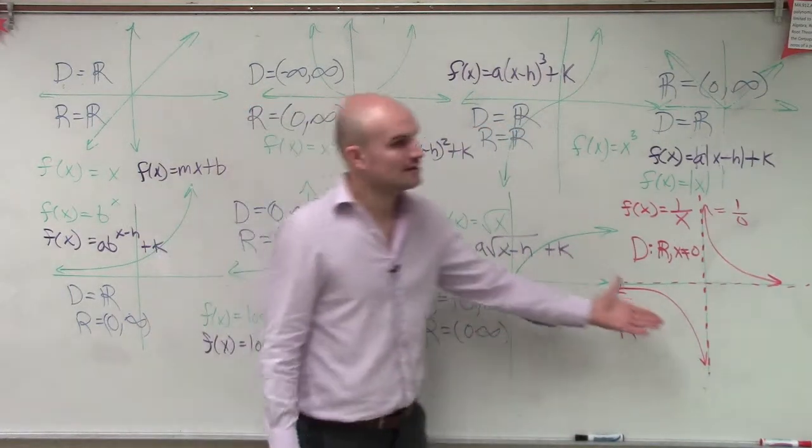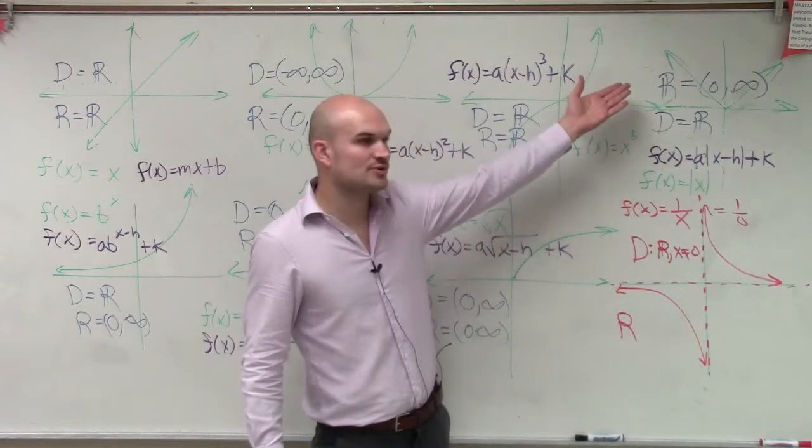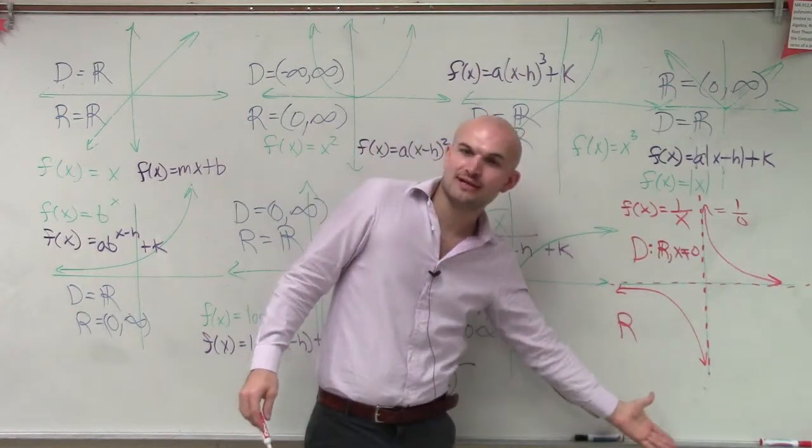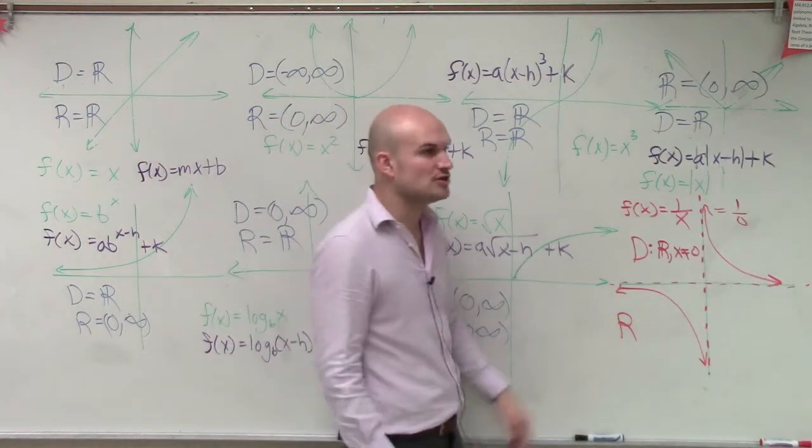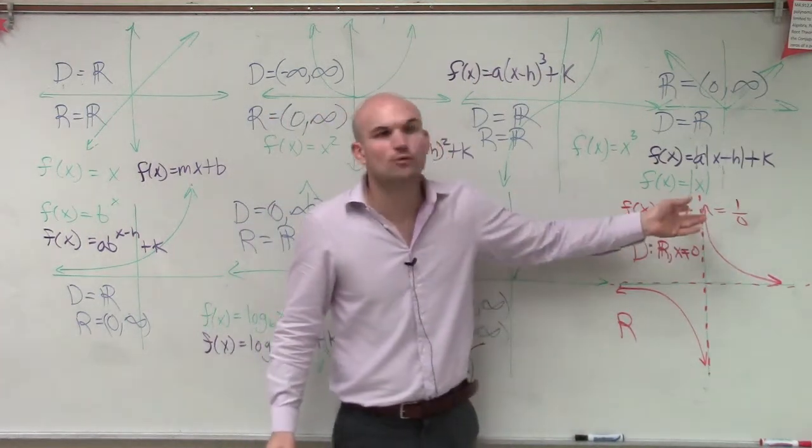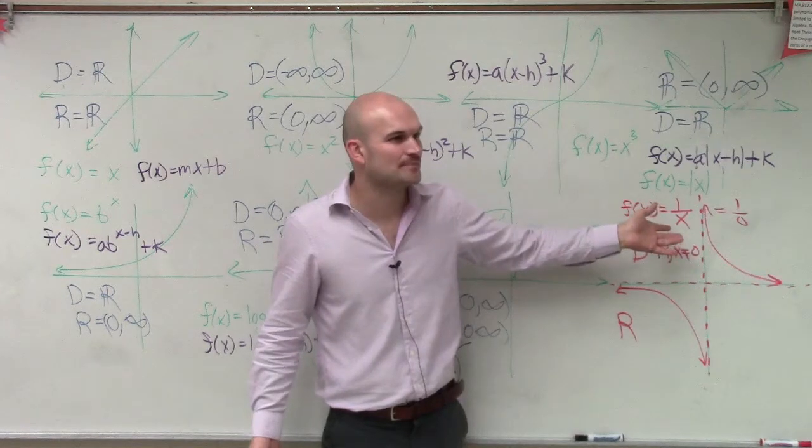The range, you guys notice, is also up to infinity and down to negative infinity, but we do not have a value at 0. So our function, because what it's saying is you can't take 1, divide it by a number, and get 0. It's impossible.